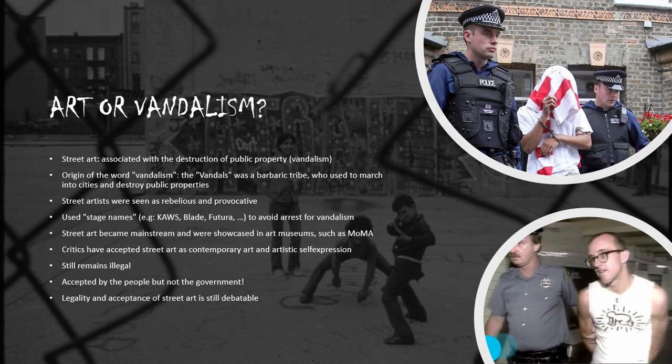It is common to associate street art with the destruction of public properties — this act is also called vandalism. The word vandalism originated from a barbaric tribe known as the Vandals. Back then, the Vandals would march into cities and destroy public properties. Though street artists don't have the same approach when it comes to destroying city properties, and they also don't bring any harm towards citizens. Although street art is now more accepted, it is still commonly associated with vandalism, and street artists are perceived as rebellious and provocative. Anybody who dares tagging walls, trains, and other public objects can be charged for vandalism. Due to this, many artists decided to create stage names — for example KAWS, Blade, and Futura — to hide and protect their real identities in case they get hunted down by the police.